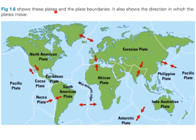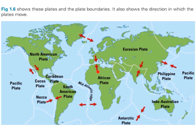Figure 1.6 shows these plates, plate boundaries, and the direction in which the plates are moving. For example, the Eurasian plate, which Ireland is on, is moving towards the African plate. The North American plate is moving away from the Eurasian plate. A very important plate we'll look at later is the Pacific plate. We are also interested in the Mid-Atlantic Ridge.